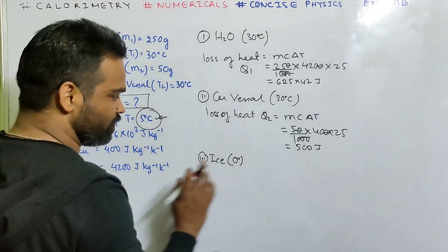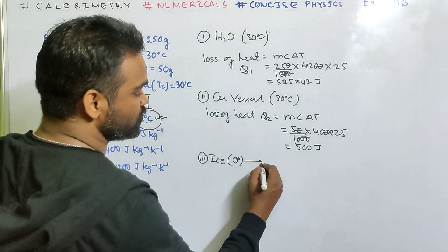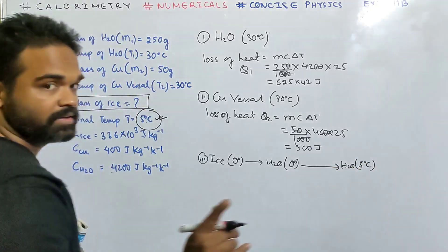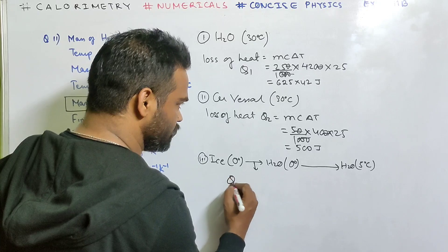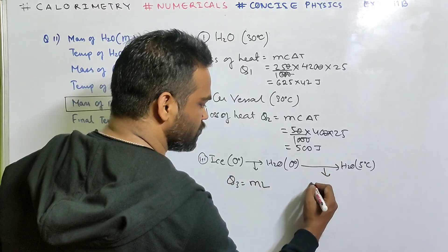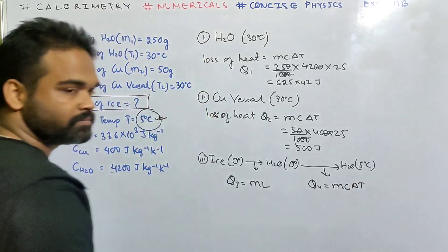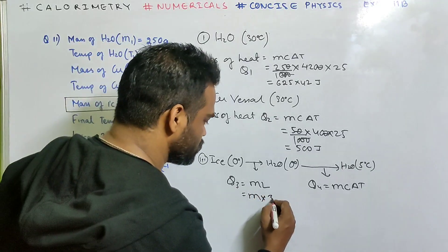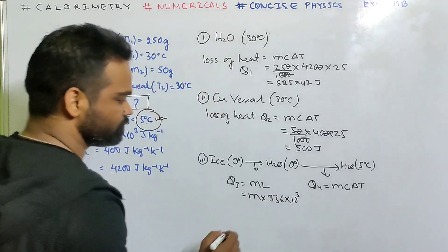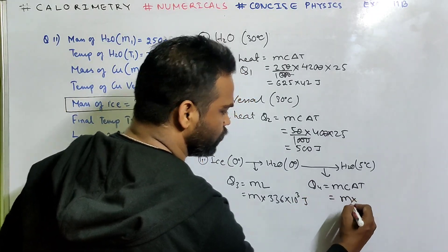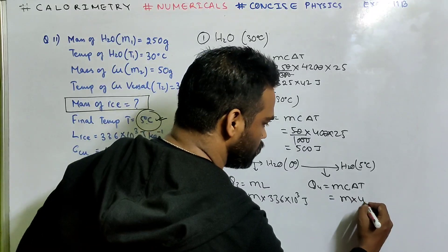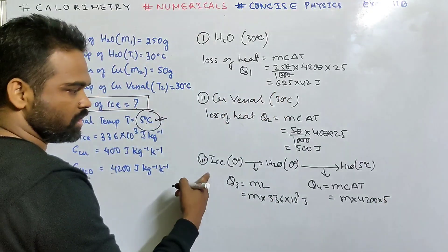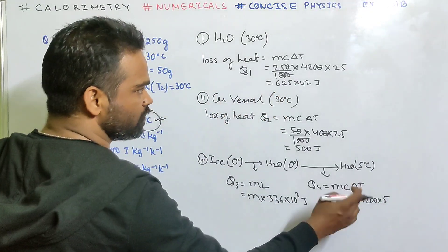Now for ice: the final temperature is 5 degree centigrade. So ice at 0 first changes state to water at 0, then warms to 5°C. Heat for change of state is ML. Heat for temperature rise is MC ΔT. M we don't know. L is 336 × 10³. For the temperature rise, C of water is 4200 and ΔT = 5 − 0 = 5.